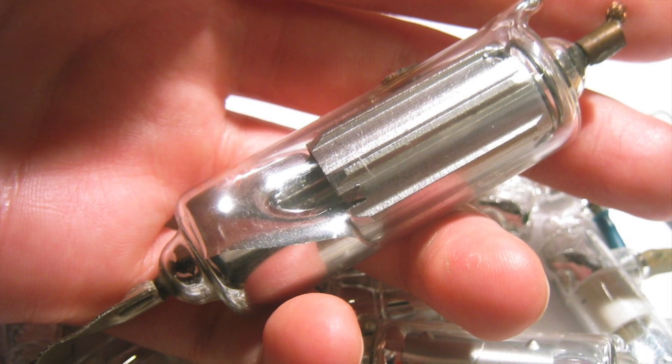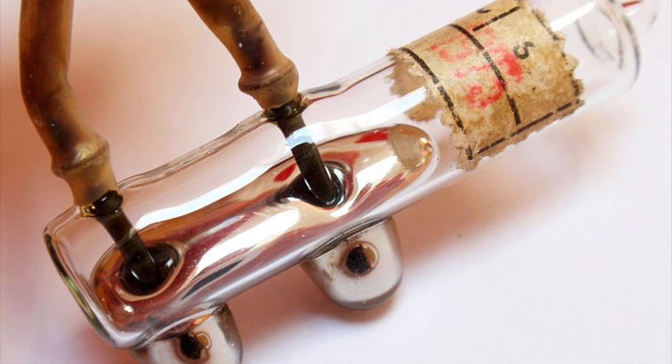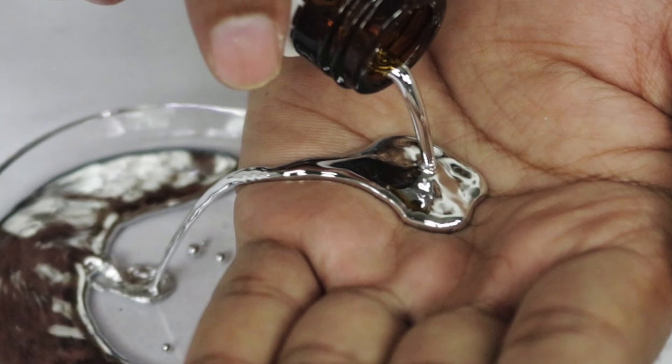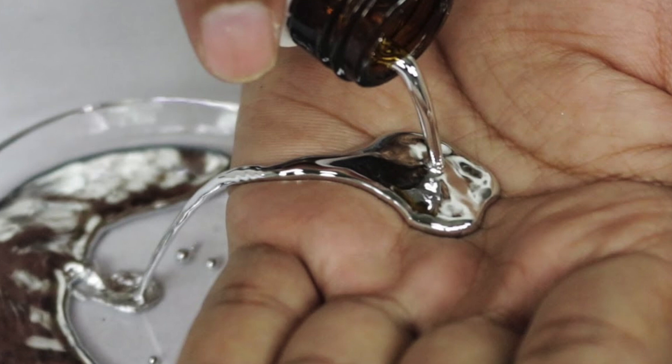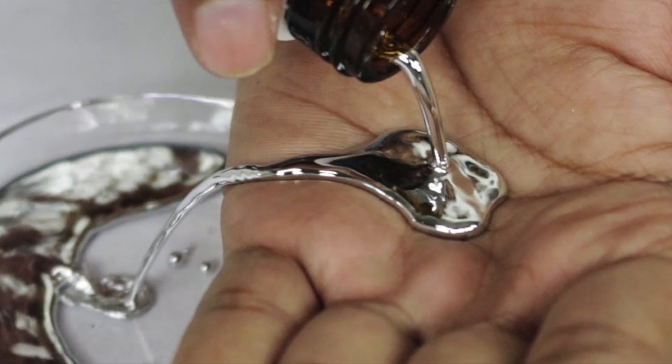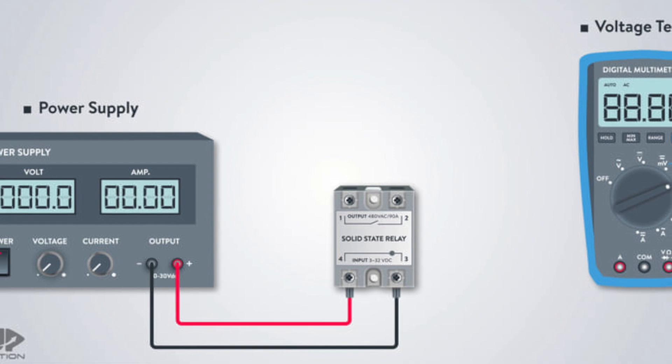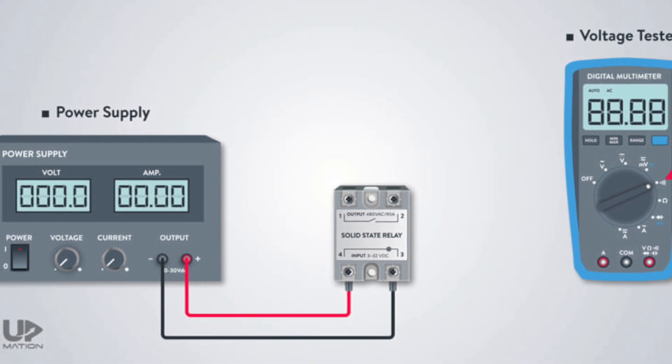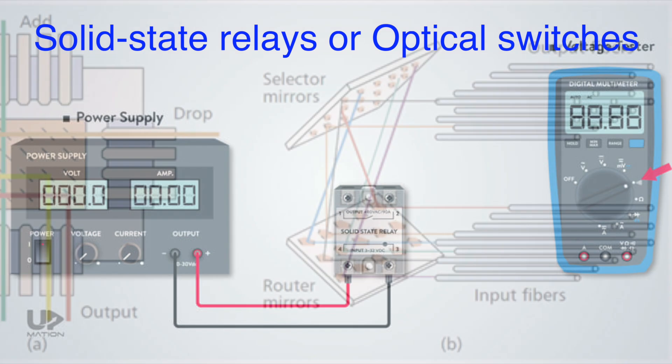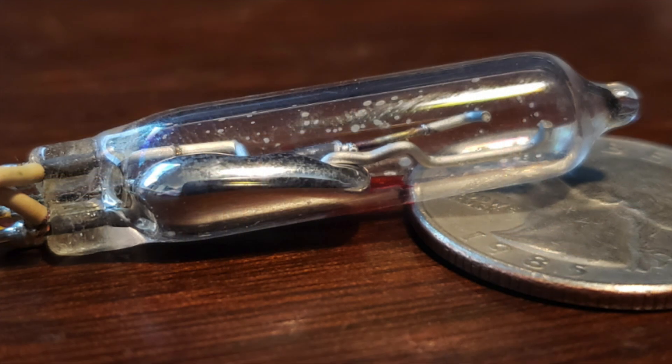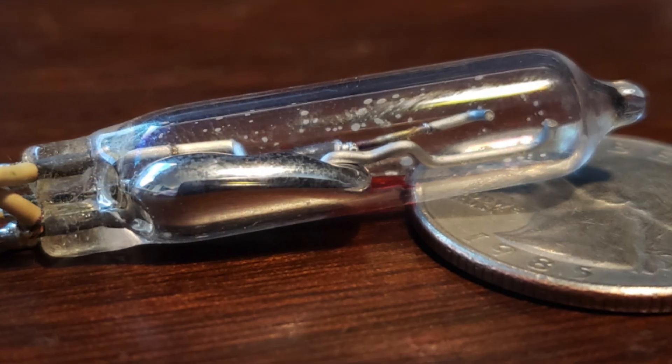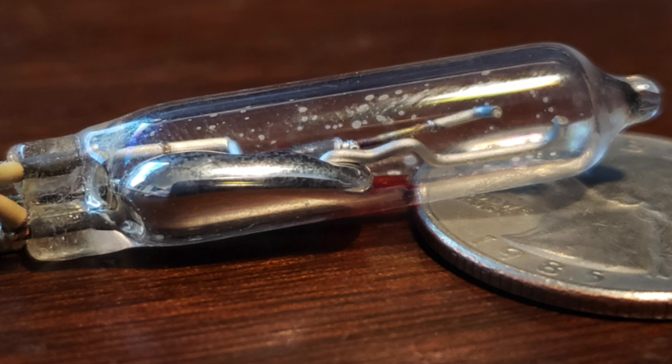Like many technologies, mercury switches have seen a shift. Today they're much less common because of health and safety concerns surrounding mercury exposure. Mercury is hazardous if it's released into the environment or comes into contact with people. If a switch were to break, you'd have a potentially dangerous situation on your hands. Because of this, many modern switches use alternative designs like solid-state relays or optical switches, which can perform the same basic function without the need for toxic materials. But for decades, mercury switches were a critical part of many industries, and they still have niche applications today.